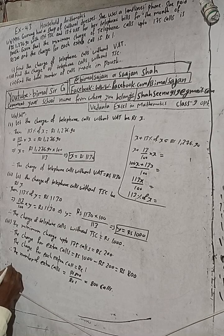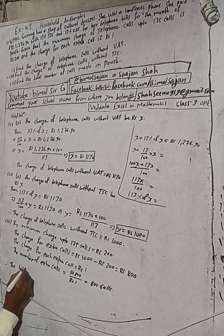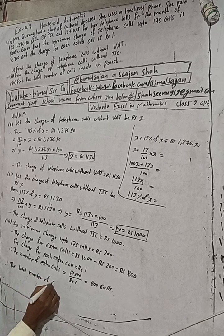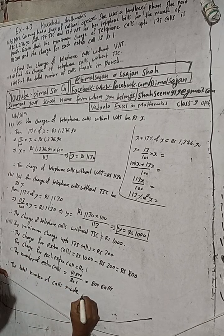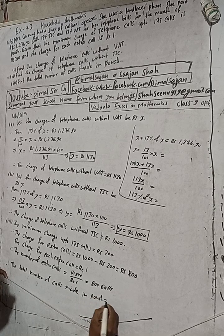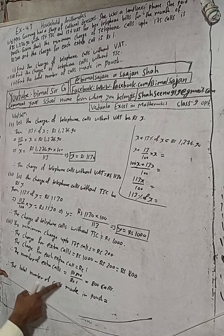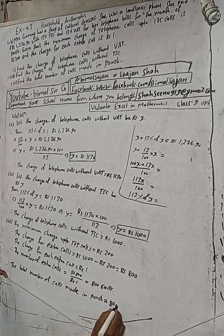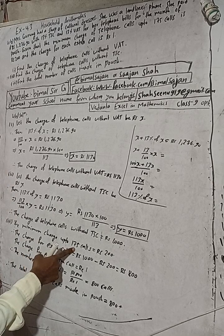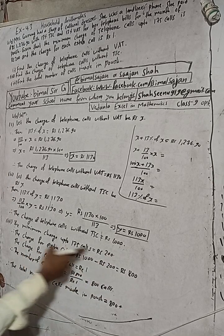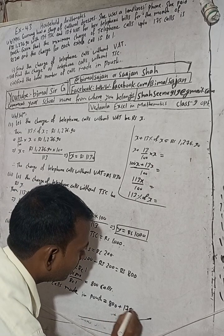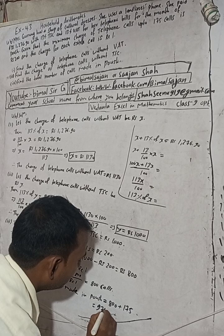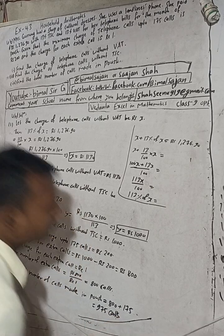Therefore the total number of calls made in Poush is equal to 800 calls plus 175 calls — because 200 is the minimum charge for 175 calls, and 800 rupees gives 800 extra calls — so the total is 175 plus 800, which equals 975 calls.